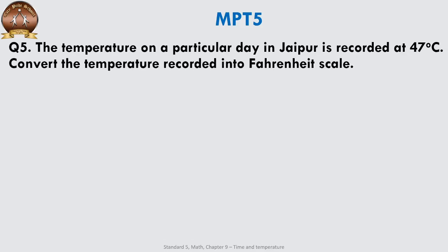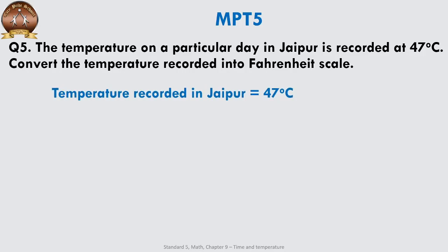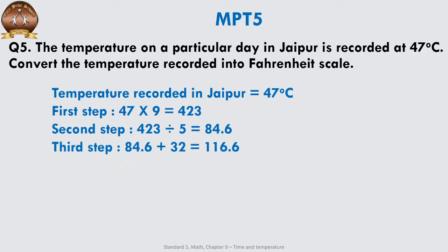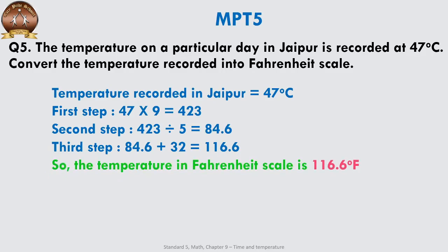The temperature on a particular day in Jaipur is recorded as 47°C. Convert the temperature into the Fahrenheit scale. Step 1: multiply by 9 — you get 423. Step 2: divide by 5 — you get 84.6. Step 3: add 32 — you get 116.6. So the temperature in Fahrenheit is 116.6°F.